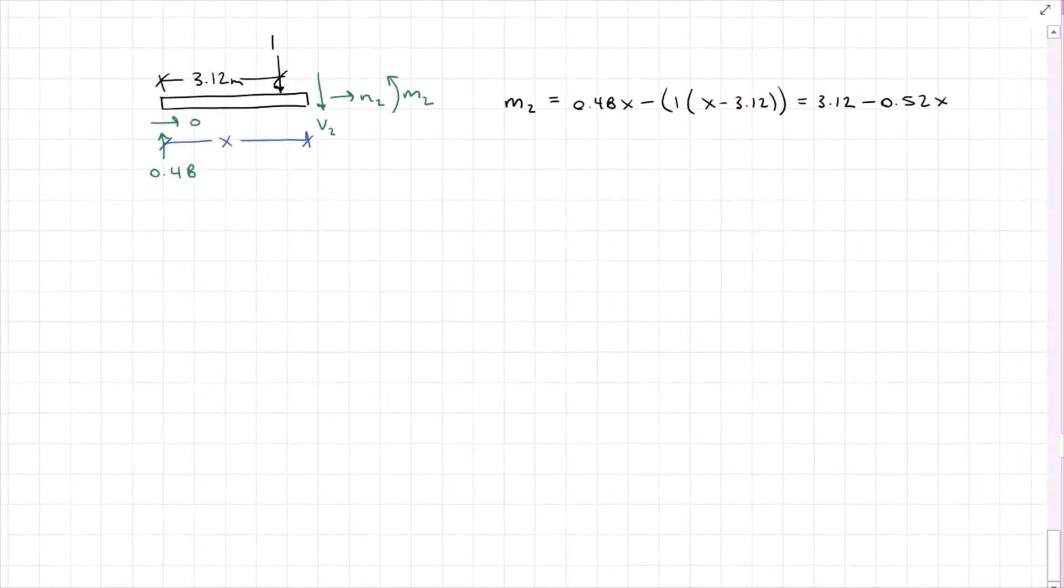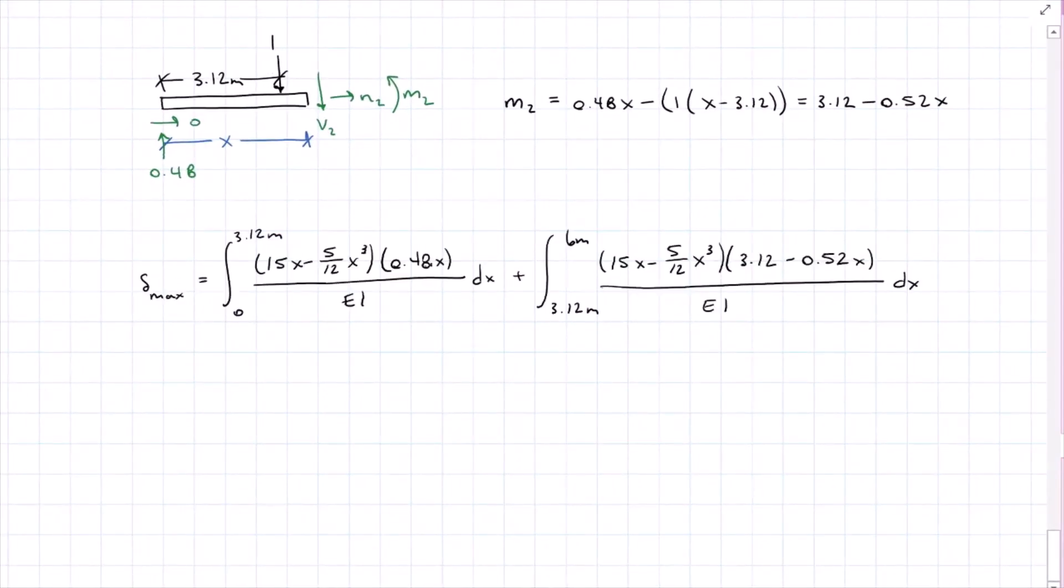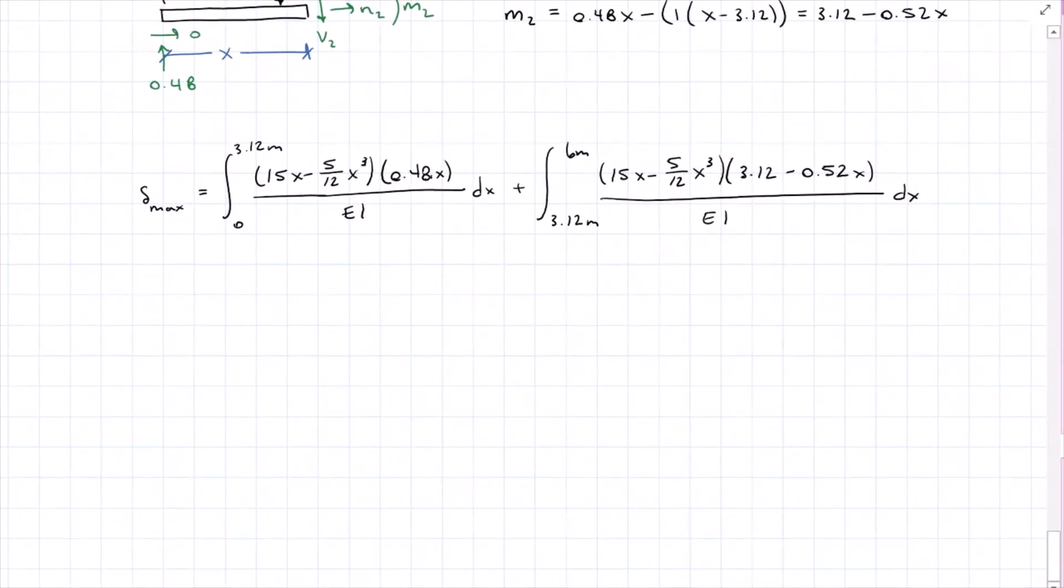Now we can plug that into our deflection equation, and solving for our integrals, we find that the maximum deflection is equal to 126.8 kilonewton meters cubed over our material and geometric properties of the beam, and we got a positive answer, which means that it is acting in the direction I assumed it, which is down.